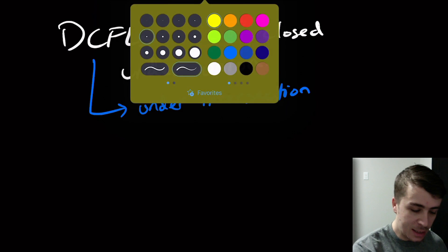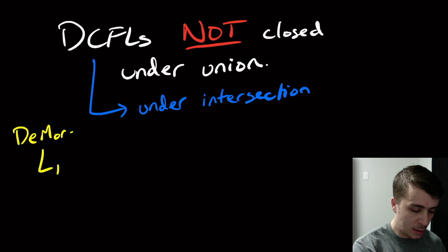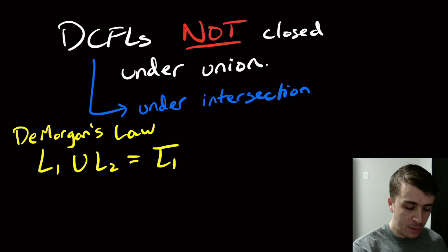And the reason for that is actually pretty simple. It's based off DeMorgan's Laws. Remember DeMorgan's Law. Augustus DeMorgan. Remember his name. So remember the relationship between intersection and union. If we have L1 union L2 is equal to the complement of L1 intersection L2 complement, and then the whole thing complemented again.